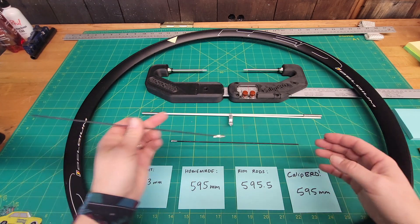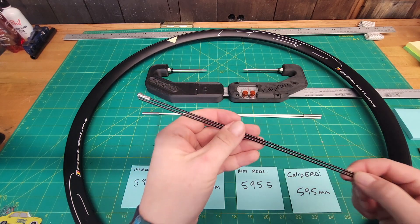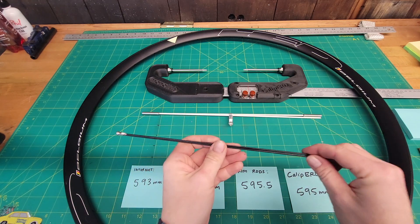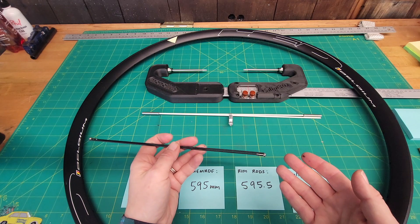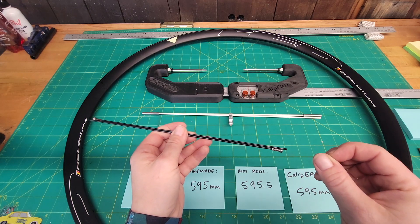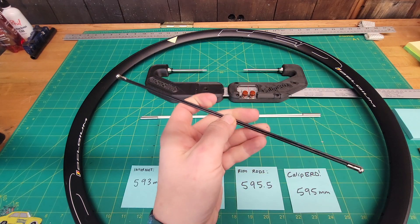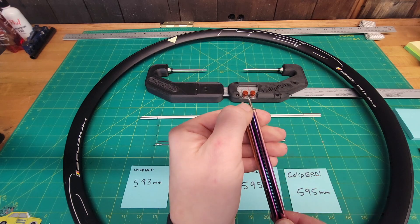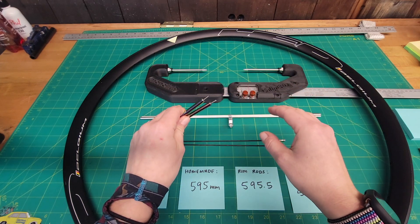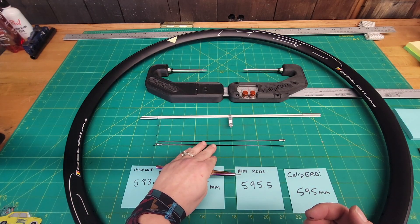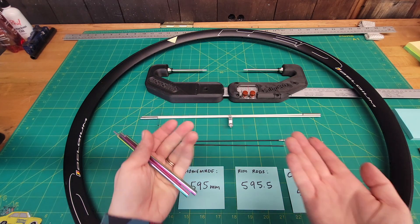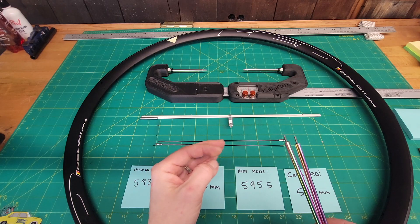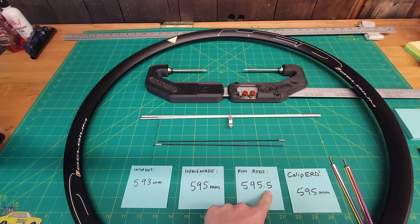The caliper and the homemade tool being the same makes sense because they both use actual spoke nipples. The nice thing about making your own or using the caliper is that you can use the spoke nipple you're actually going to use in the build. That becomes important when building with something like an Envy spoke nipple that sits differently in the rim. Monolith actually has prototype indicators with nipple thread so you can put your own spoke nipple on and recalibrate for a different nipple type.